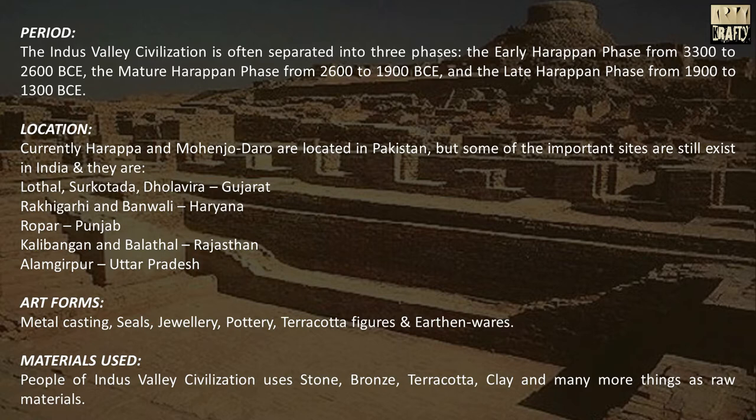This civilization can be divided into three phases: Early Harappan phase 3300 to 2600 BC, Mature Harappan phase 2600 to 1900 BC, and Late Harappan phase 1900 to 1300 BC. Currently this civilization is located in Pakistan. Some important sites in India are Lothal, Surkodada, Dholavira in Gujarat, Rakhigarhi and Bhanwali in Haryana.